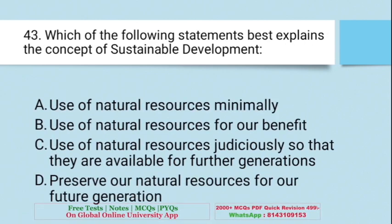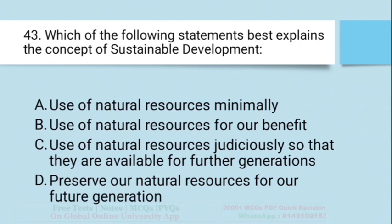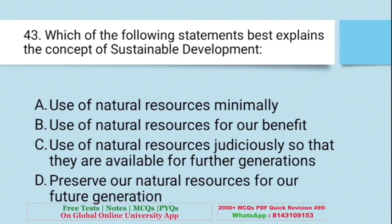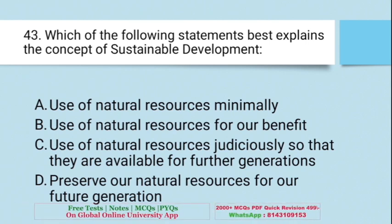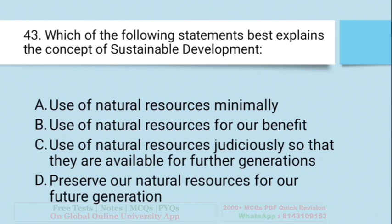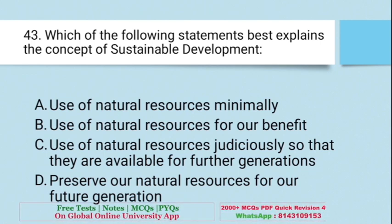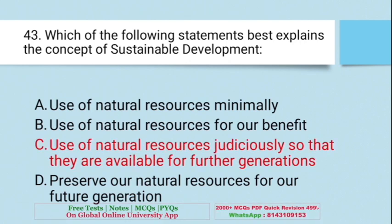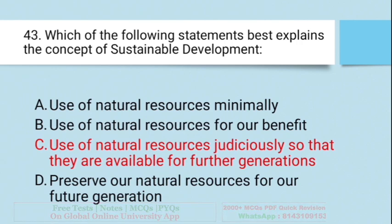Question: Which of the following statements best explains the concept of sustainable development? A. Use of natural resources minimally; B. Use of natural resources for our benefit; C. Use of natural resources judiciously so that they are available for further generations; D. Preserve natural resources for future generations. The right answer is C — using natural resources judiciously so that coming generations also benefit.